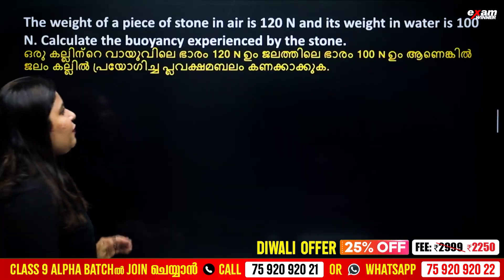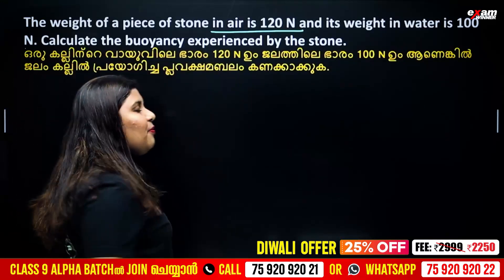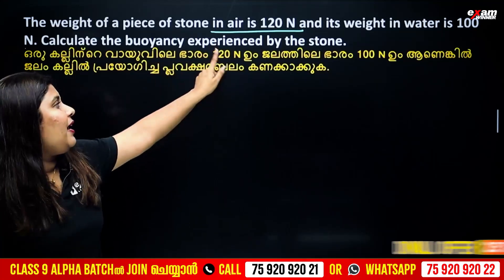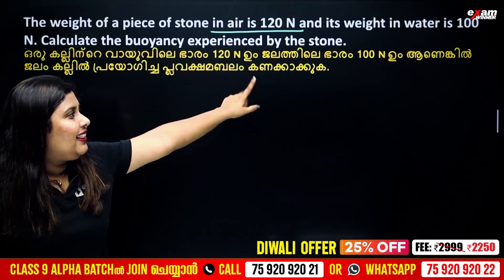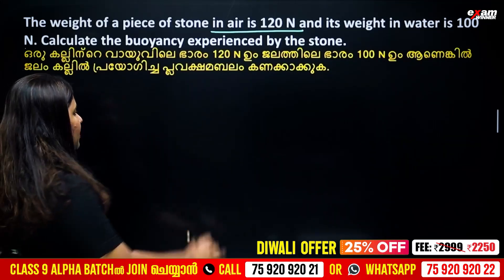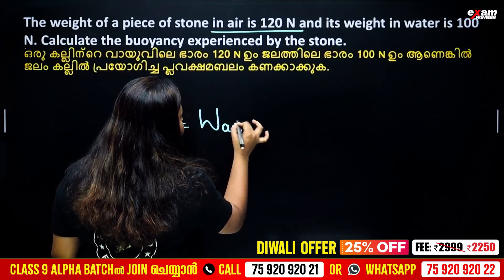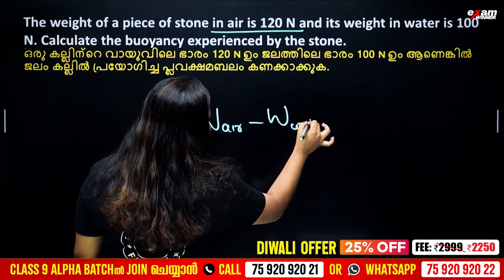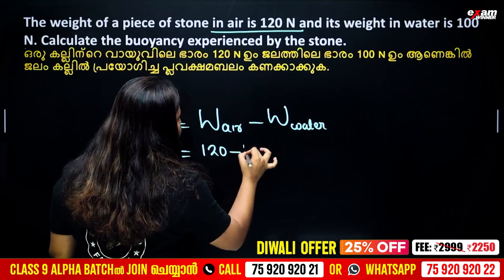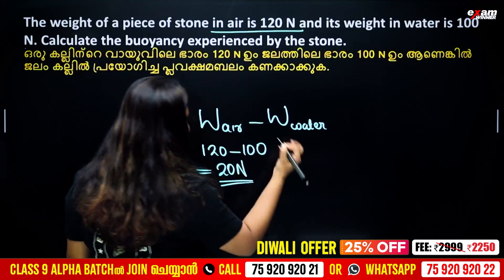Example: The weight of a piece of stone in air is 120 N and the weight in water is 100 N. Calculate the buoyancy experienced. The buoyant force equals weight in air minus weight in water, which is 120 minus 100, giving 20 N.